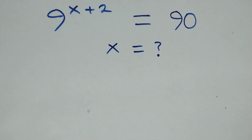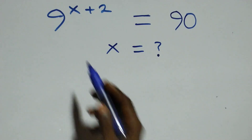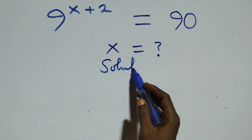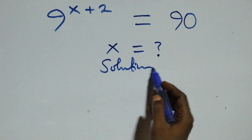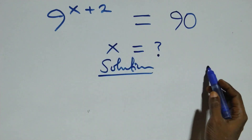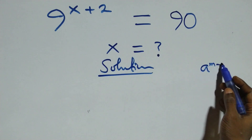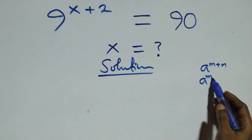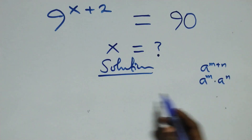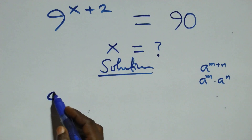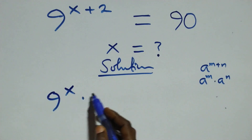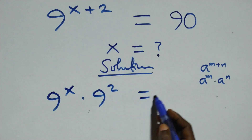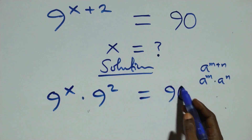Hello, you're welcome. How to solve this nice exponential equation. What we have here: when we have a raised to power n plus n, it is the same thing as a raised to power n times a raised to power n. This becomes 9 raised to power x times 9 squared equals 90 on this side.